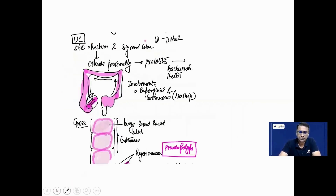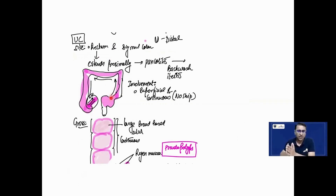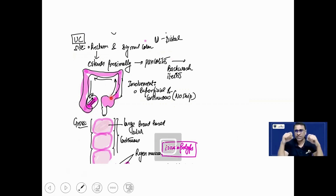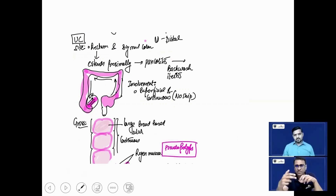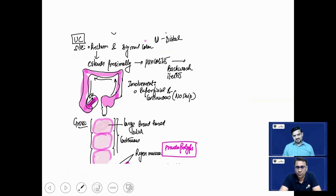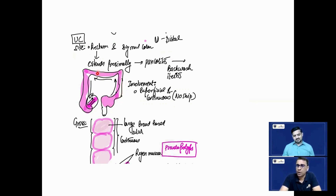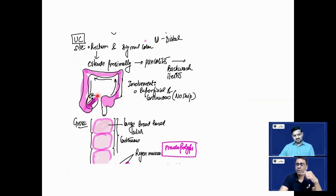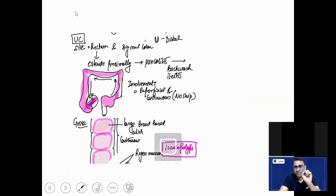In ulcerative colitis, it starts from the rectum. A useful mnemonic: C and U — Crohn's and ulcerative. Because U comes after C, ulcerative is a distal involvement and Crohn's is a proximal involvement. Ulcerative colitis always starts from the rectum and sigmoid colon and gradually spreads backward. Because it completely involves the colon, it is called pancolitis. After involving the colon, it then goes further backward into the terminal ileum; because this involvement comes from the backward direction, it is called backwash ileitis.